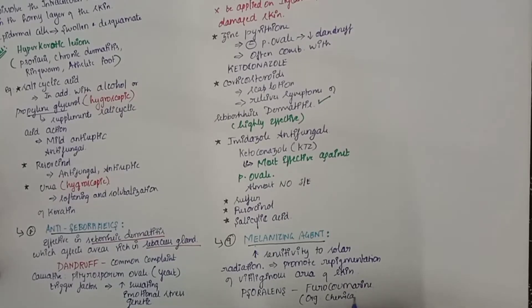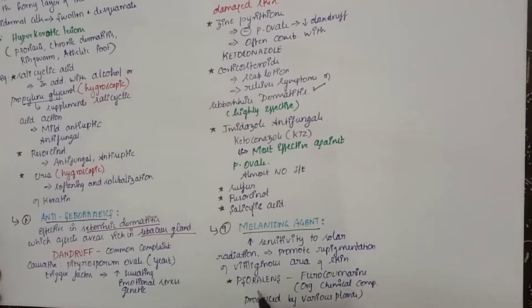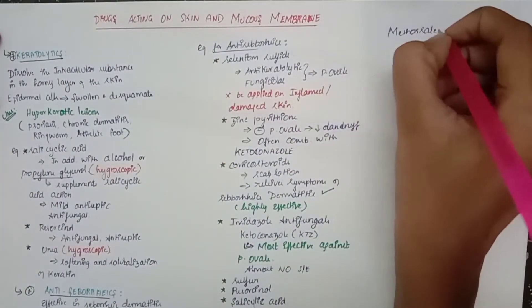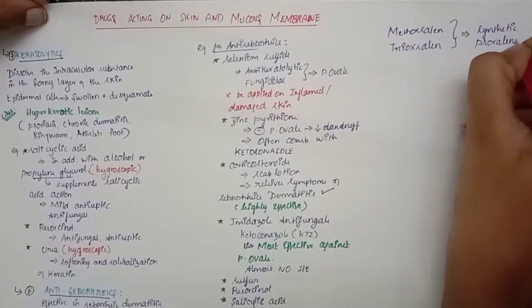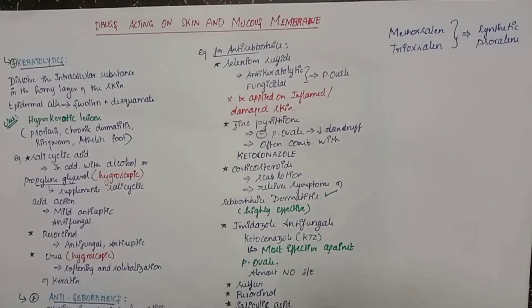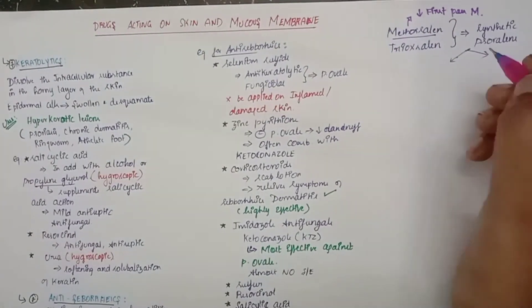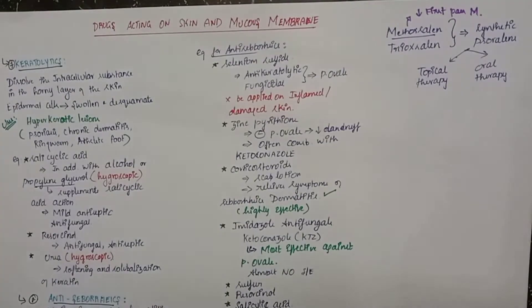The soralins are drugs which are the furocomerins. Furocomerins are organic chemical compounds produced by various plants. The two drugs namely methoxaline and trioxaline are the synthetic soralins. In this, methoxaline has decreased first-pass metabolism. So these synthetic soralins are of topical and oral, both therapies.